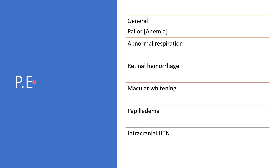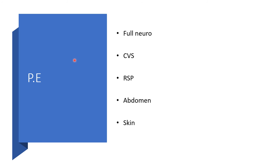For physical examination: a thorough general examination should be done. Check for pallor, indicating anemia. Look for abnormal respiration, retinal hemorrhage, macular changes, papilloedema, and intracranial hypertension. A full neurological examination, cardiovascular system, respiratory system, abdomen, and skin should all be inspected.